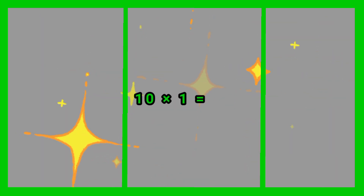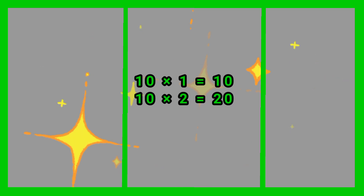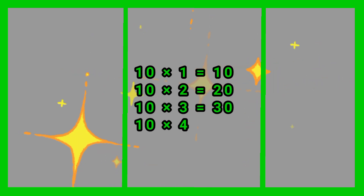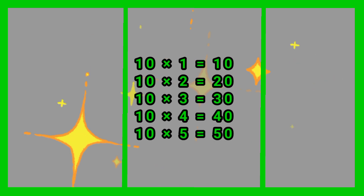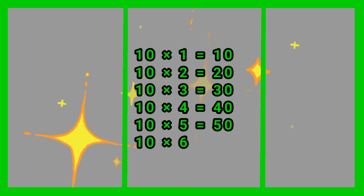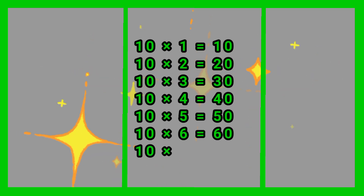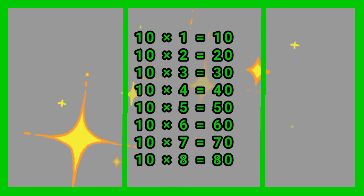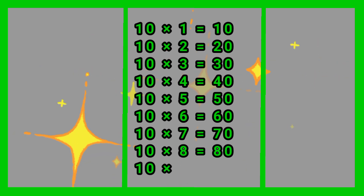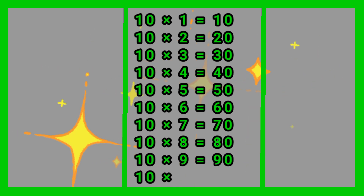Multiplication Table of 10. 10 times 1 jah 10. 10 times 2 jah 20. 10 times 3 jah 30. 10 times 4 jah 40. 10 times 5 jah 50. 10 times 6 jah 60. 10 times 7 jah 70. 10 times 8 jah 80. 10 times 9 jah 90. 10 times 10 jah 100.